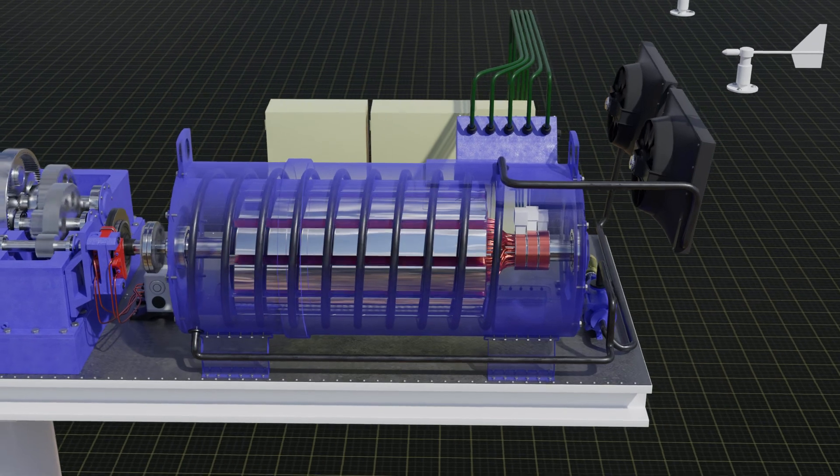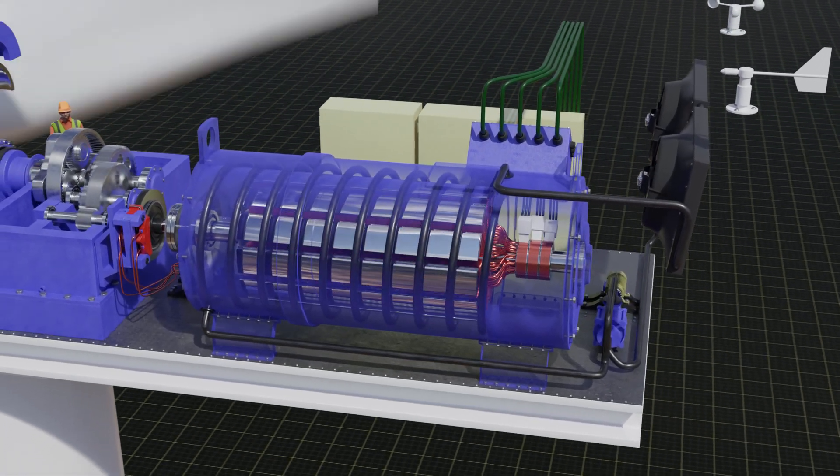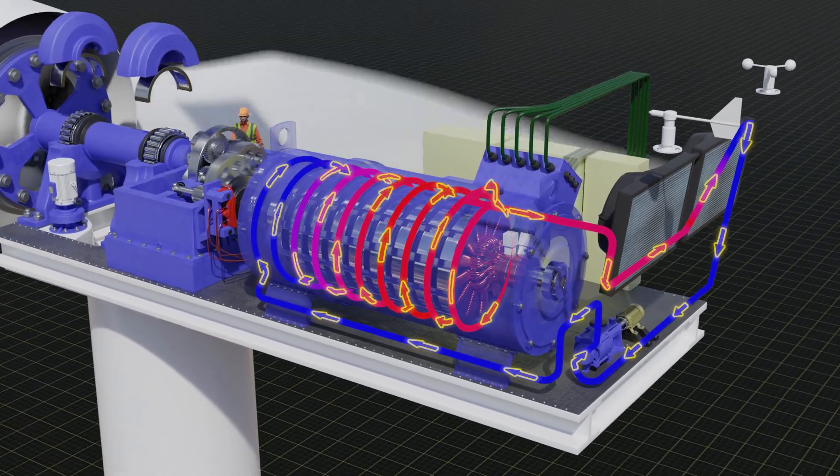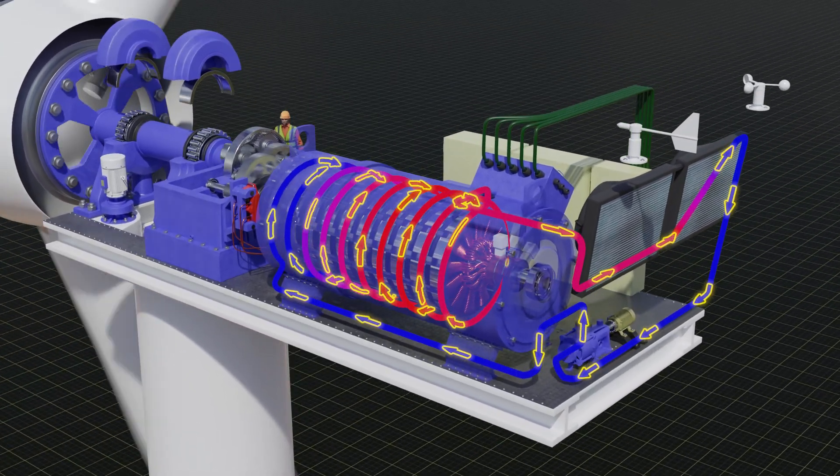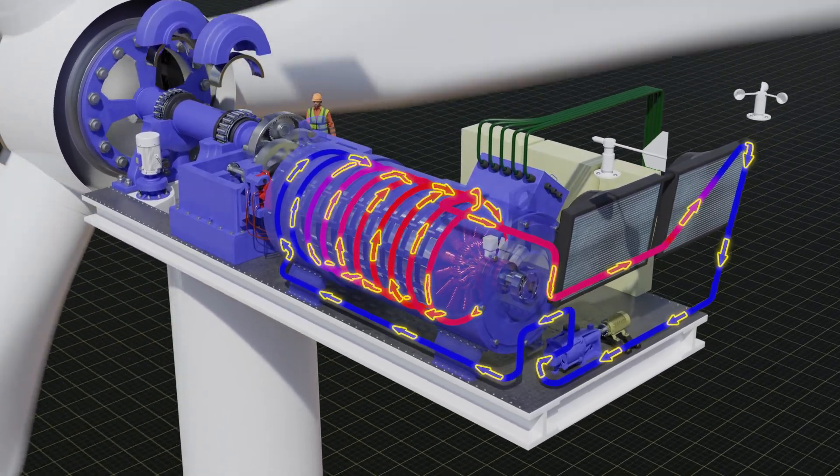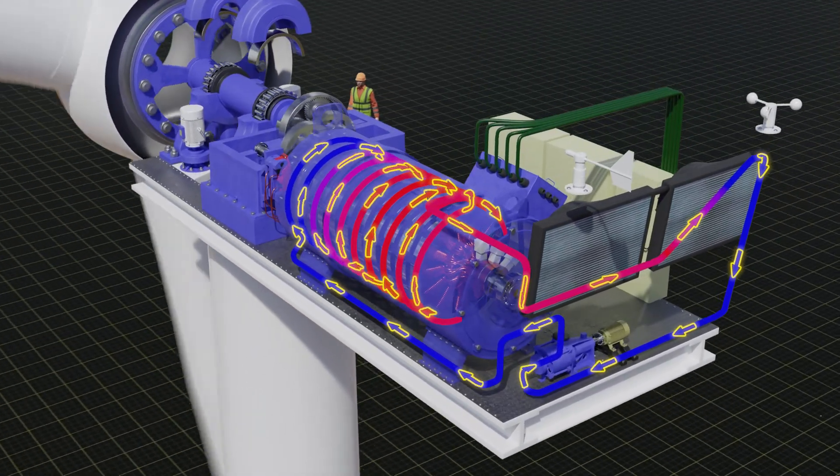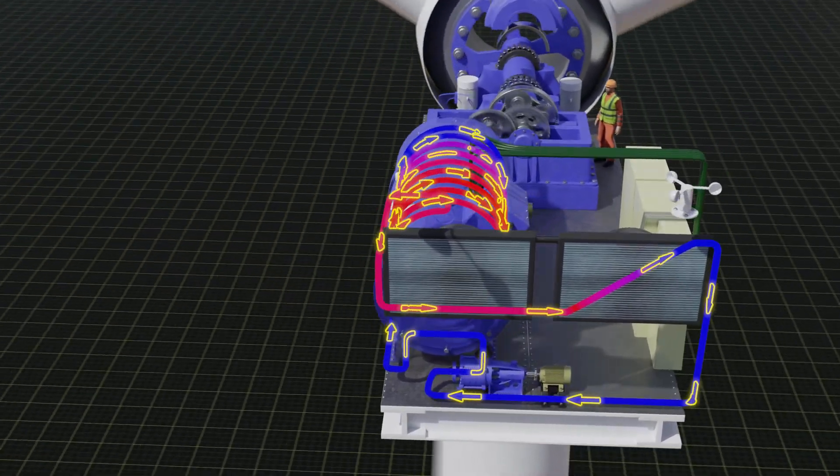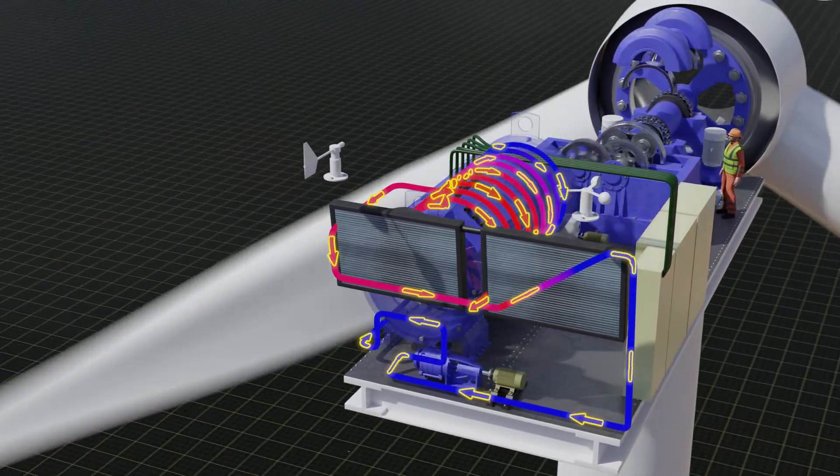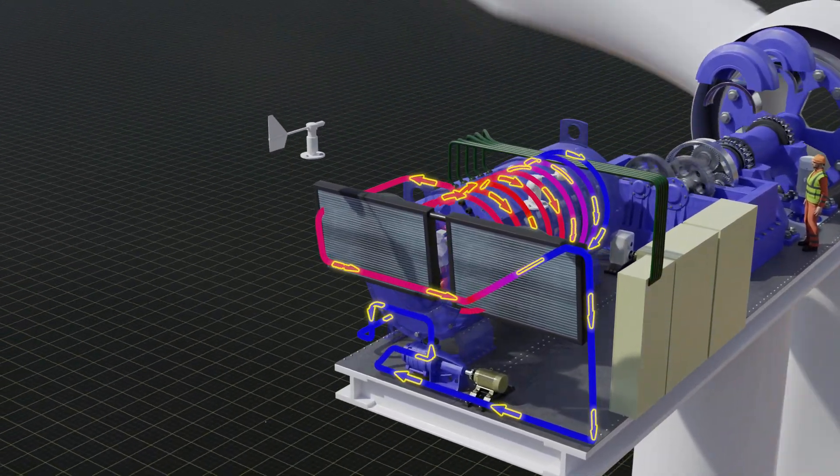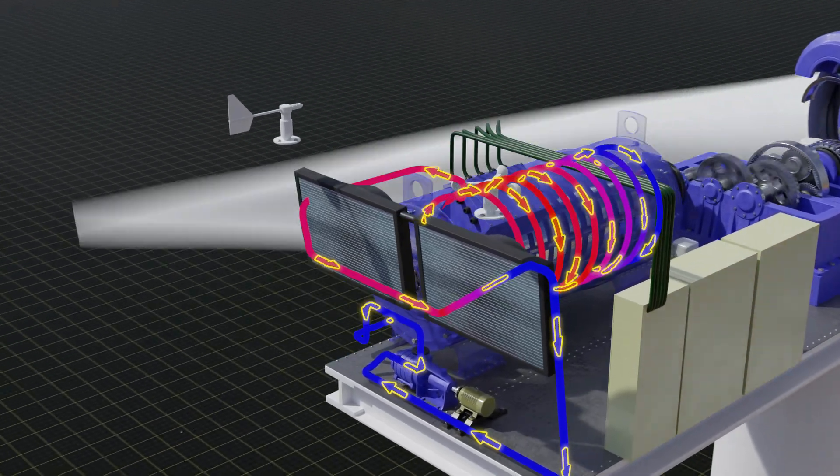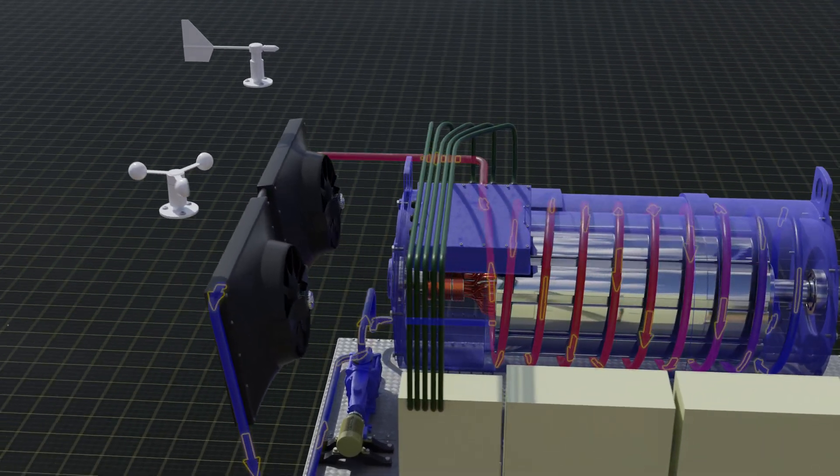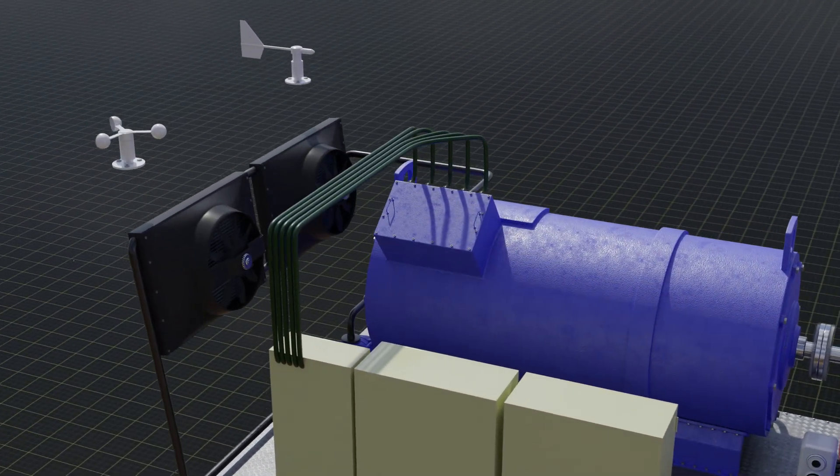While generating electricity, the generator heats up, so it needs to be cooled. This powerful turbine uses liquid cooling of the generator. The coolant is pumped by a pump into special cavities in the generator. Inside the generator, the fluid is heated, then it passes through the pipes to the radiators where it is cooled by fans. From the radiators, the fluid flows back to the pump, and so on in a circle. Less powerful turbines do not have a liquid cooling system. In such turbines, the generator is simply cooled by air with a fan.